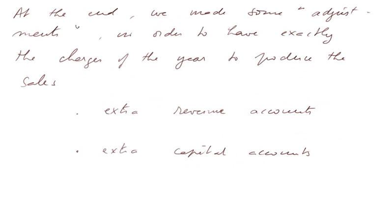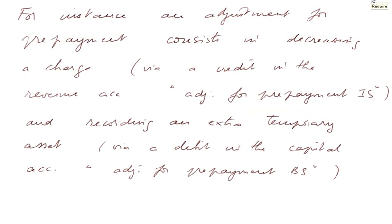At the end of this first cycle, we made some adjustments in order to have exactly the charges of the year to produce the sales. These adjustments are made through extra revenue accounts and extra capital accounts. These revenue accounts I named with an IS next to them. For instance, an adjustment for prepayment consists in decreasing a charge via a credit in a revenue account called 'adjustment for prepayment IS,' perhaps directly in the charge account, but it is in credit, and recording an extra temporary asset via a debit in a capital account called 'adjustment for prepayment BS.'